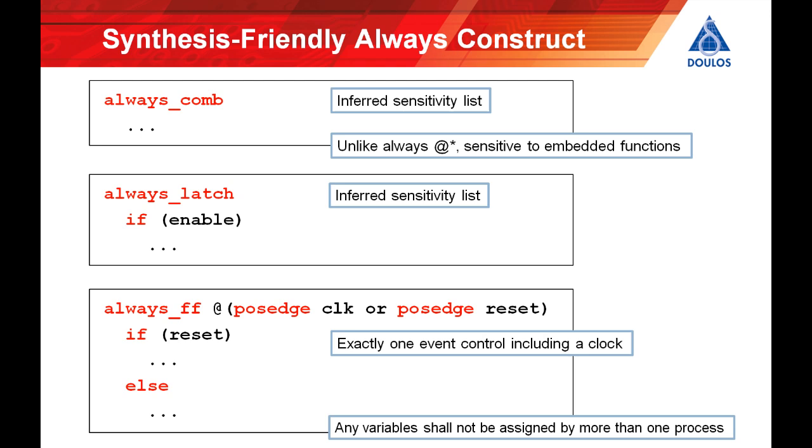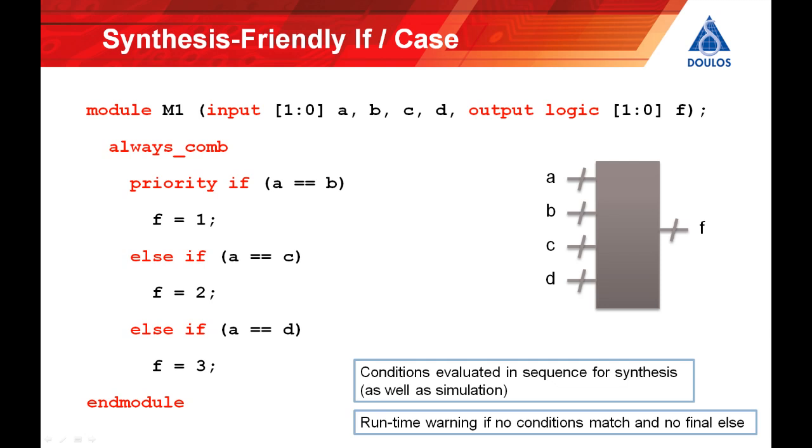As well as the new forms of always block, SystemVerilog has two new keywords priority and unique to direct the synthesis of if and case statements. You could equally well use these new keywords in combinational or clocked always blocks but will illustrate the principles using an always comb. Priority and unique have been introduced to help avoid several very common synthesis pitfalls around the use of conditional if and case statements. In particular unwanted transparent latches due to incomplete assignments and removing logic to decode conditions that can't actually occur in the hardware without also introducing fatal differences between simulation and synthesis.